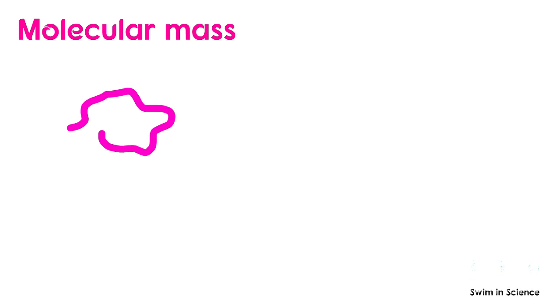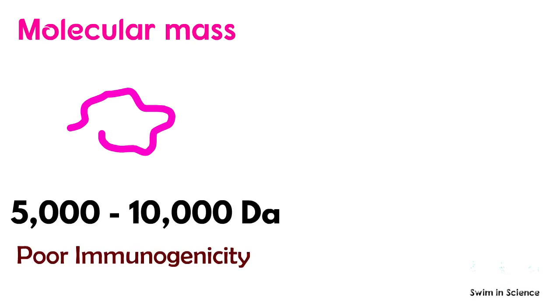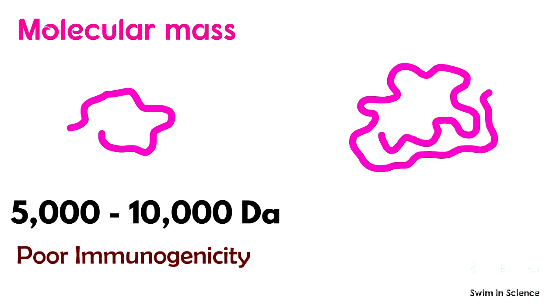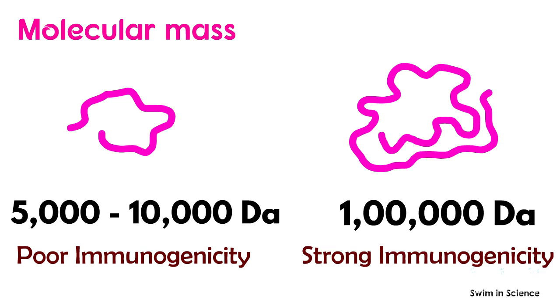Generally, substances with a molecular mass less than 5,000 to 10,000 Daltons are poor immunogens. In contrast, molecules with more than 100,000 Daltons show strong immunogenicity.